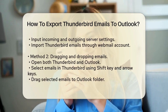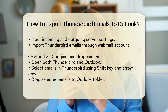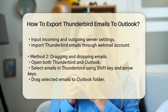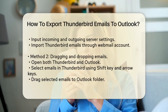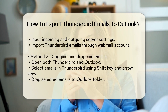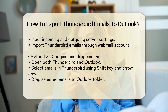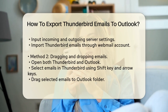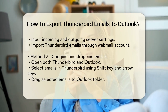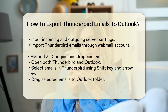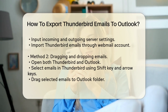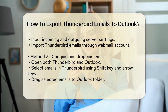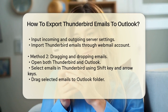In Outlook, go to File, Add Account, select the option to manually configure server settings, and enter your IMAP details. Set up the incoming and outgoing server settings, including port numbers and encryption. Once set up, you can import your Thunderbird emails into Outlook through this webmail account.